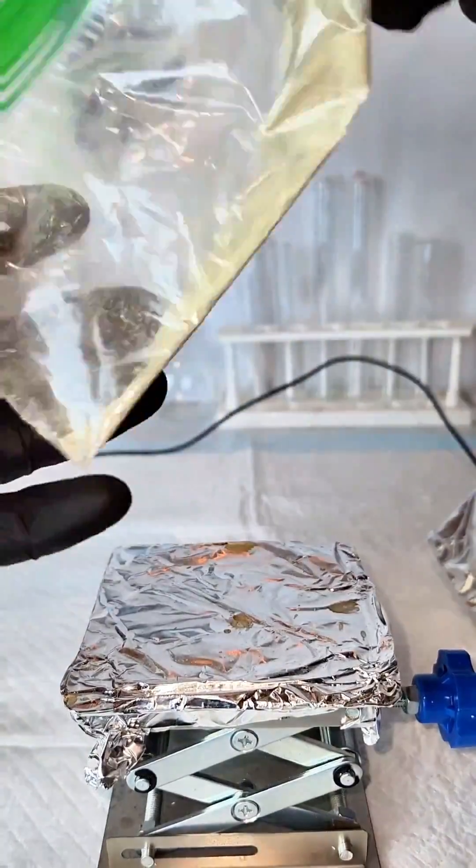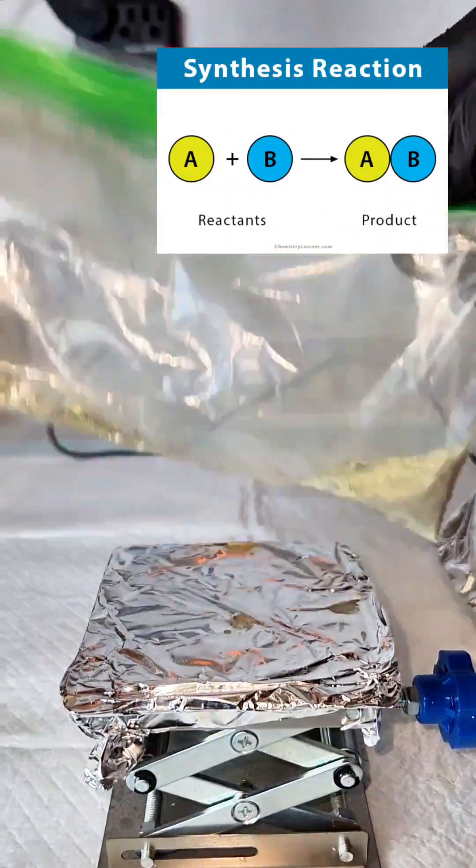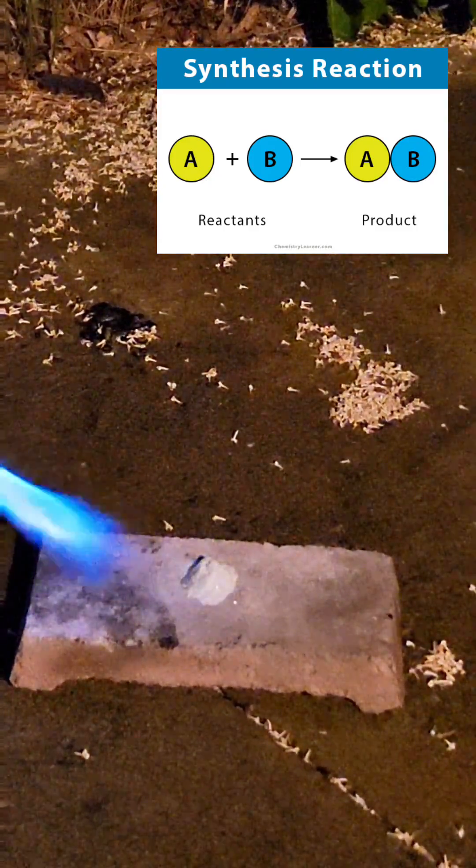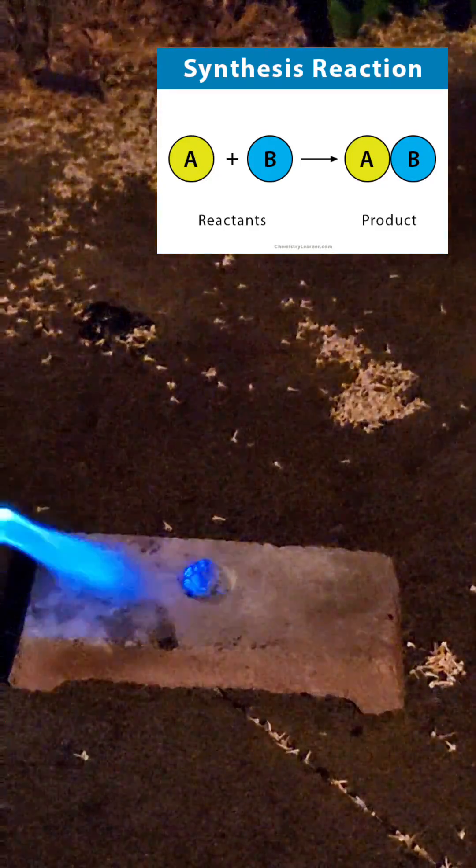I think this is a really good example of a synthesis reaction, which is one of the core types of chemical reactions. This process can actually be used to make a variety of metal sulfides, but zinc sulfide has a very unique property that I'll show you in a second.